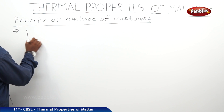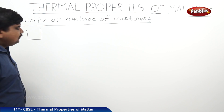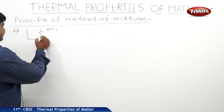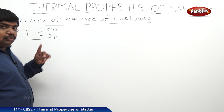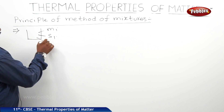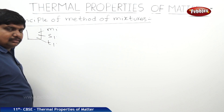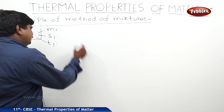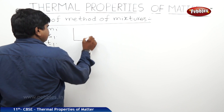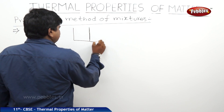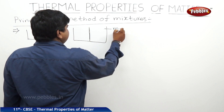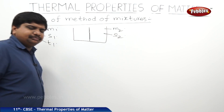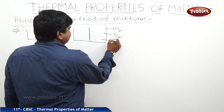Take a body of mass M1. Its specific heat capacity is S1, which is at a temperature T1. This body is thermally in contact with another body of mass M2, of specific heat capacity S2 and temperature T2.